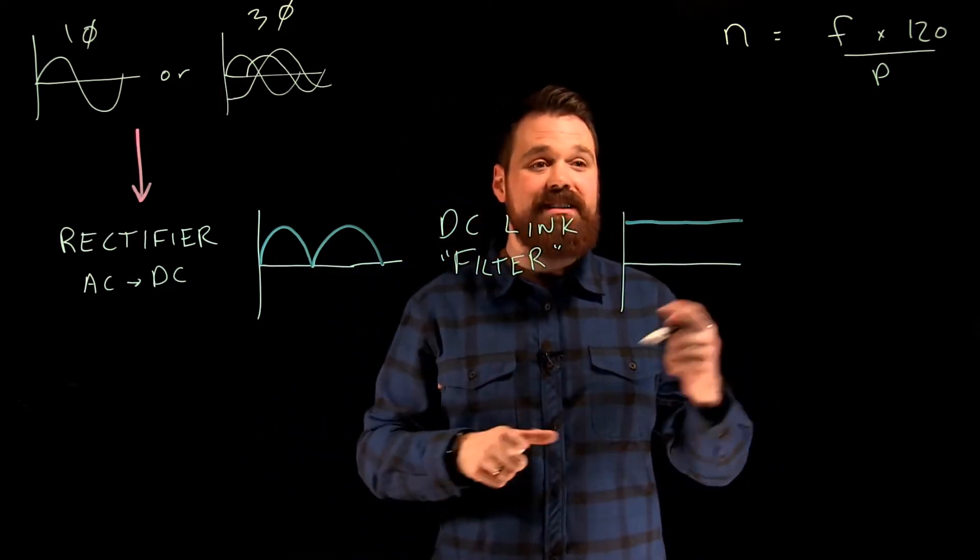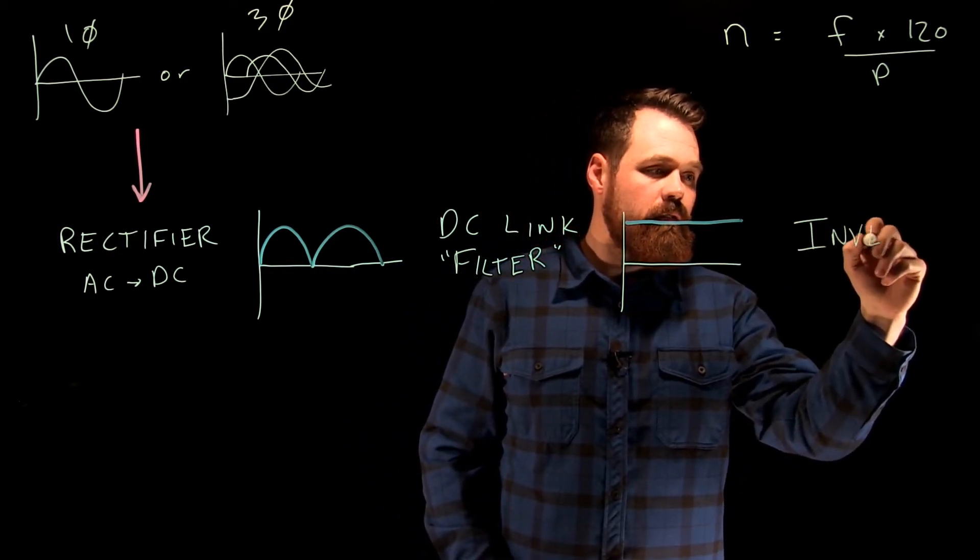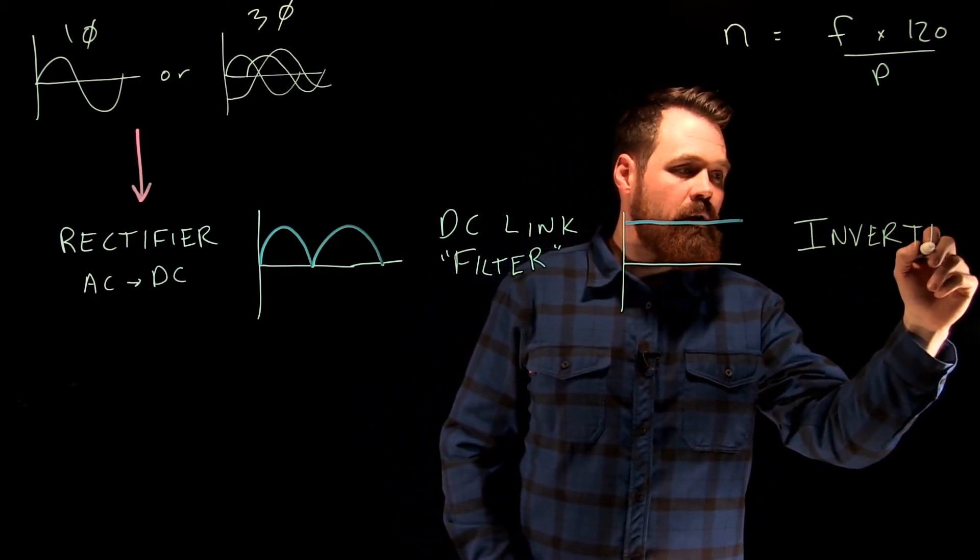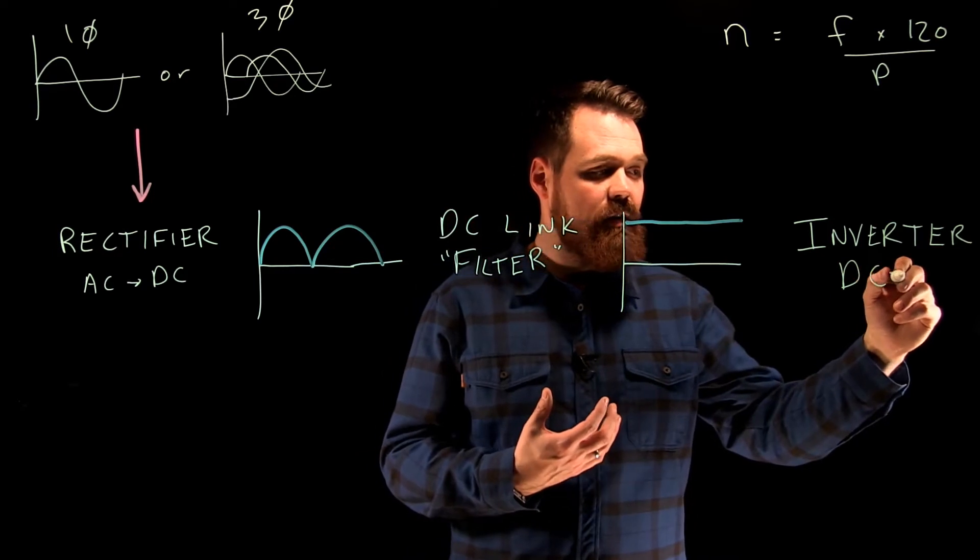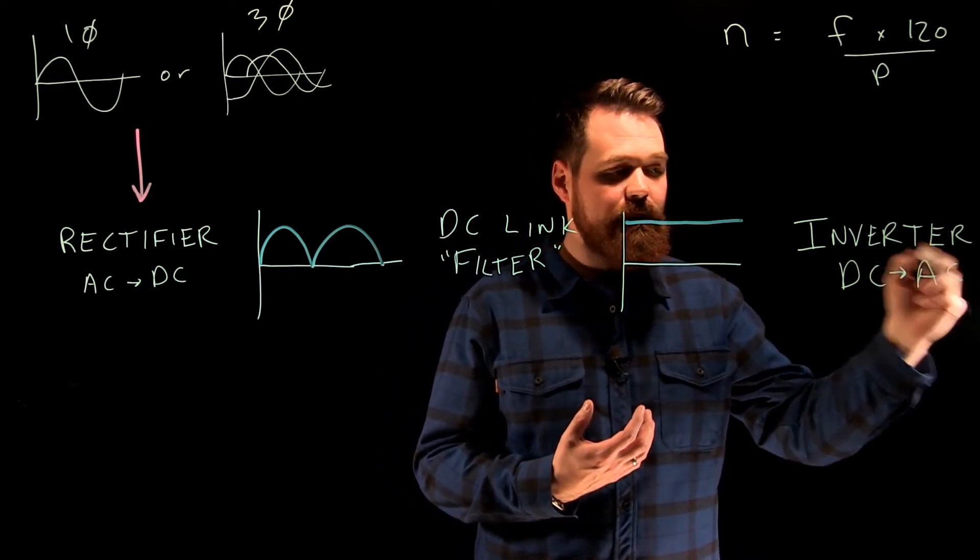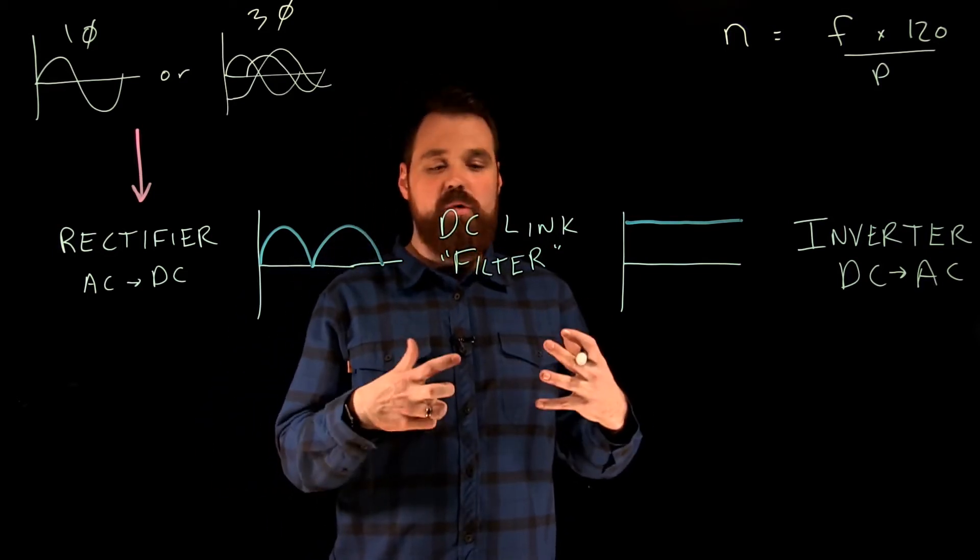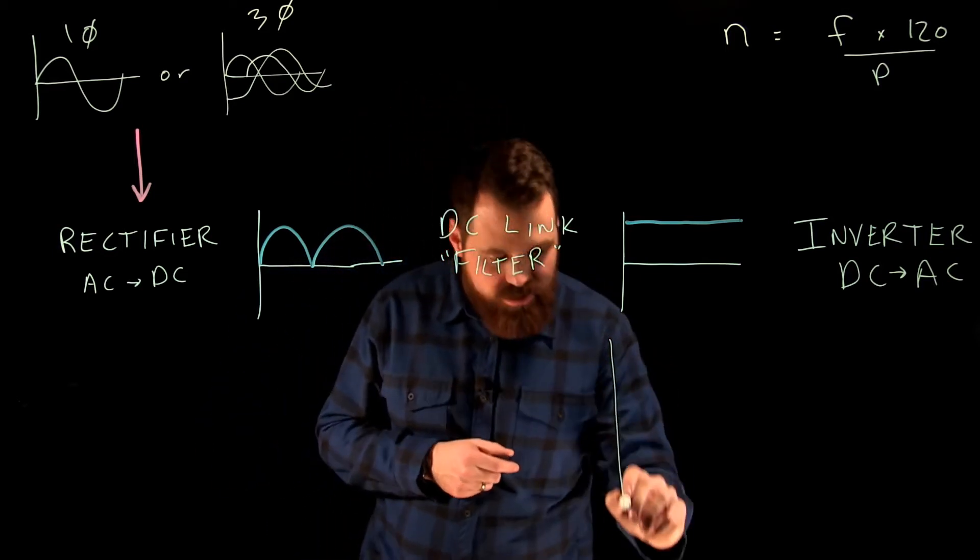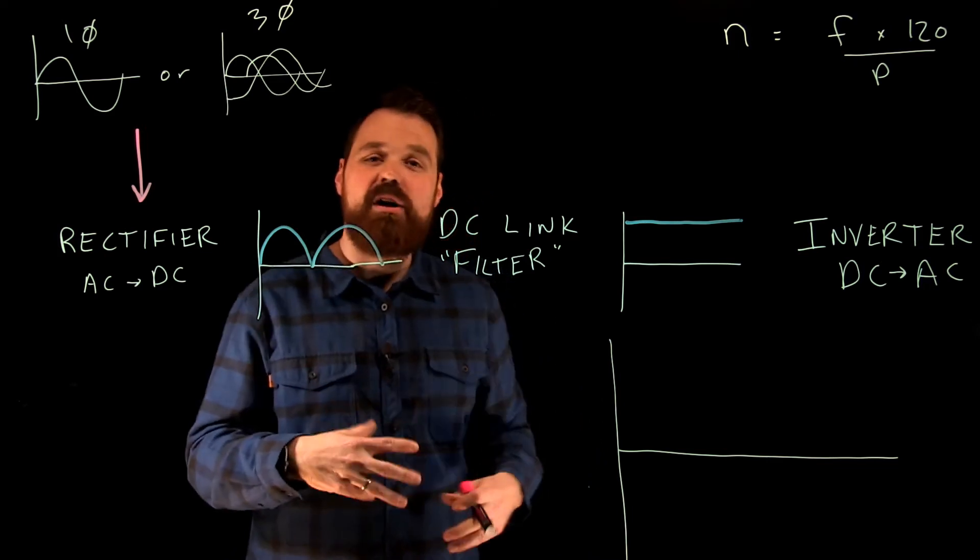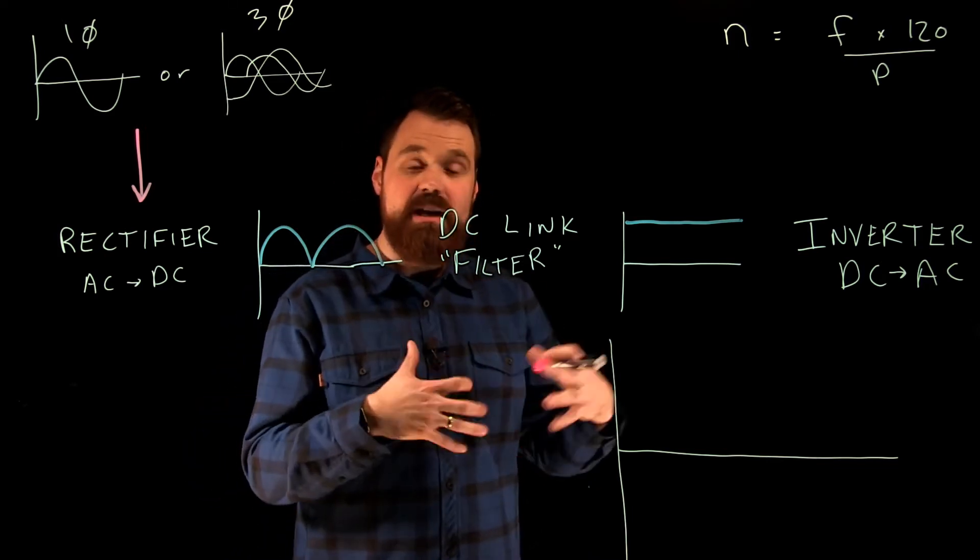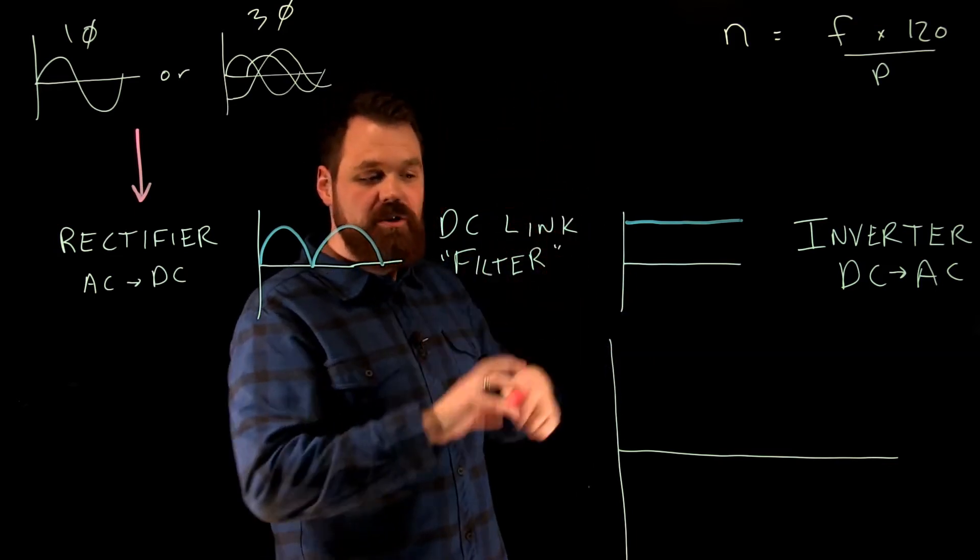Then we send it into the last part of the VFD, which is the inverter. What an inverter does is it takes DC energy and turns it into AC energy. The big trick with VFDs is when I do that, it will actually pulse the DC at different speeds for different lengths of time. It'll also adjust the DC voltage at which it's pulsing.